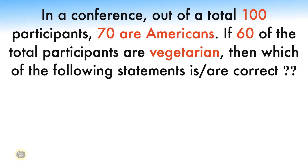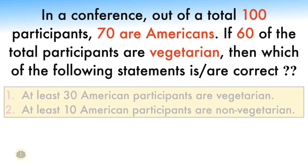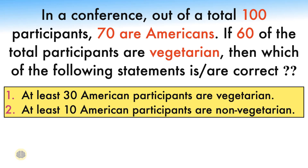In a conference, out of a total 100 participants, 70 are Americans. If 60 of the total participants are vegetarian, then which of the following statements is correct? Statement 1: at least 30 American participants are vegetarian. Statement 2: at least 10 American participants are non-vegetarian. You are supposed to find the correct statement after analyzing the problem. There can be both statements correct or neither of the statements can be correct.